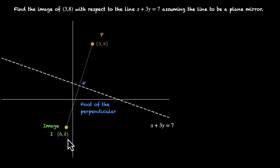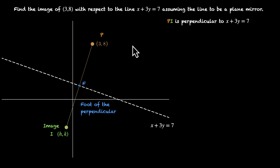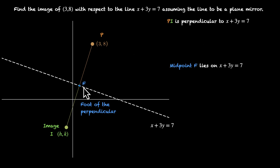We need two equations because we have two variables. The first one: PI, this line segment, is perpendicular to x plus 3y equals 7, so we can compare the slopes. The second one: F, which is the midpoint of PI, lies on the line x plus 3y equals 7. From this we can get the second equation.